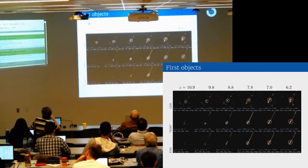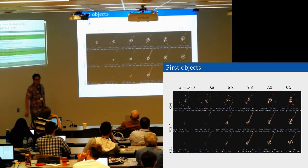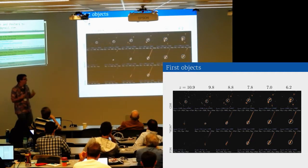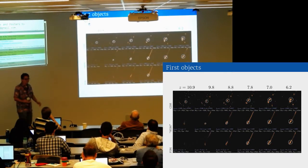I just wanted to highlight that some of these first structures look quite filamentary in the fuzzy dark matter and warm dark matter models. And if you run the simulation longer, they do end up looking like regular galaxies later on.